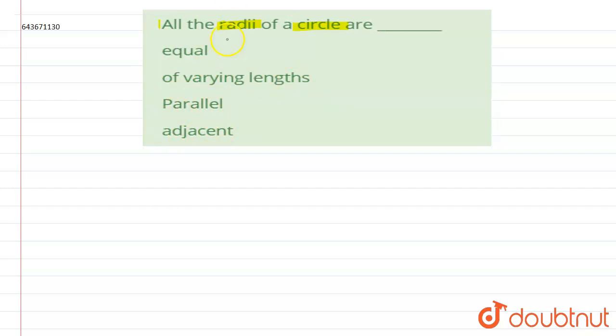In this question, we need to find out whether the radii of the circle are equal, of varying length, parallel, or adjacent. To solve this, let us draw a circle here.